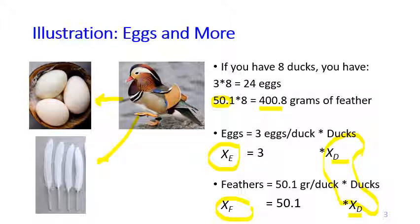Here in the production process model, the units may be different. From duck become eggs, from duck become grams of feather. So that's the illustration. So let's go on to see the production process formulation.